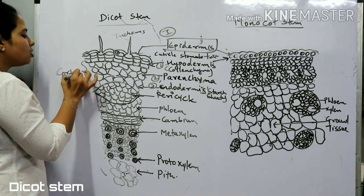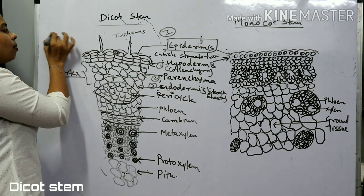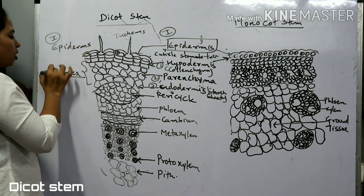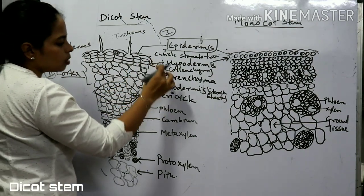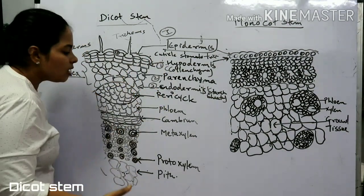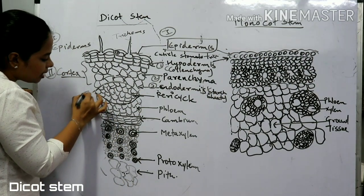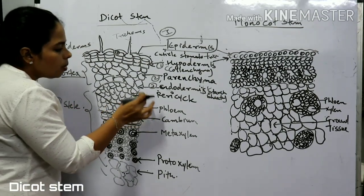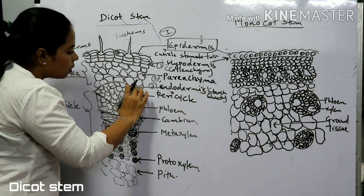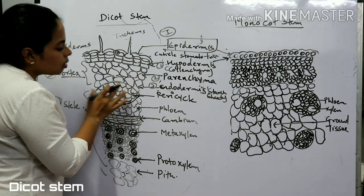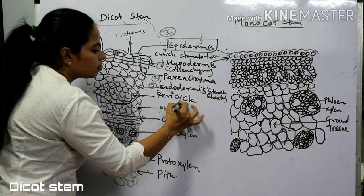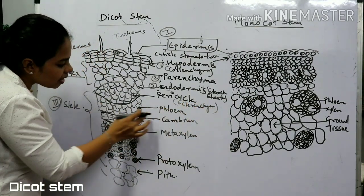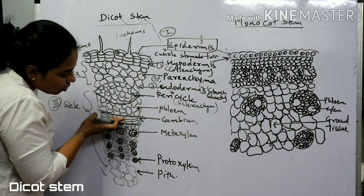So the dicot stem has two major regions so far: epidermis and cortex. From the pericycle to the pith, these layers are known as the stele. The pericycle is the oval semi-lunar part consisting of sclerenchyma. After that, you have phloem, and then cambium.